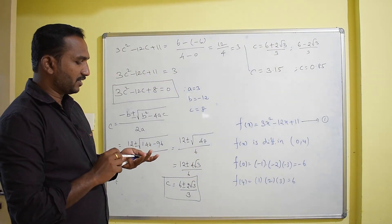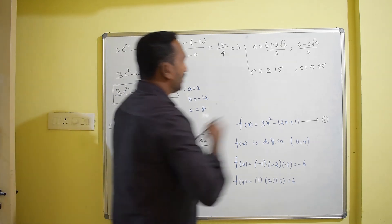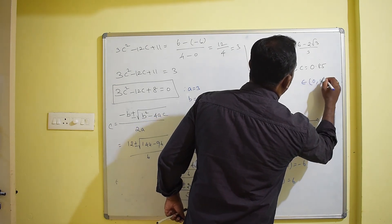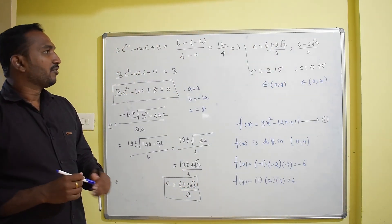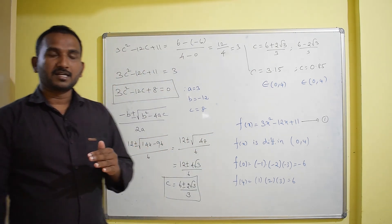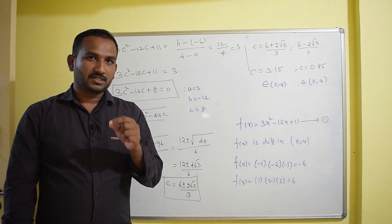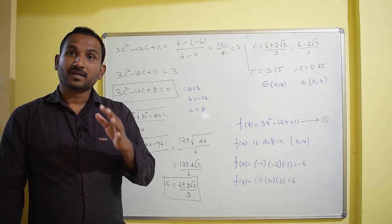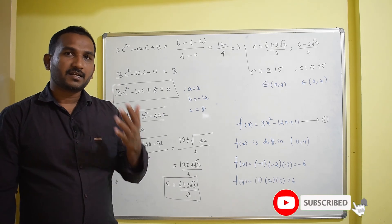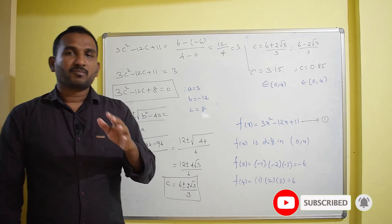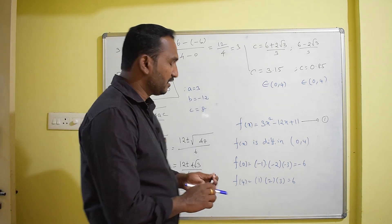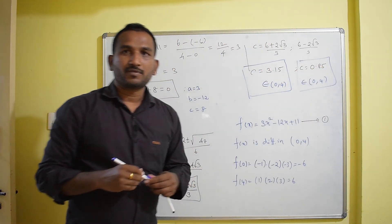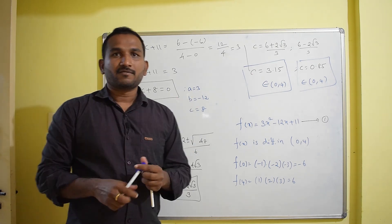Looking at the given interval (0,4): both c = 3.15 and c = 0.85 lie within the open interval (0,4). The theorem states that after the two conditions are satisfied, there exists at least one value c in the open interval (a,b) such that f'(c) = [f(b)-f(a)]/(b-a). Here we got two such values, 3.15 and 0.85, which is perfectly valid. This is how we verify Lagrange's Mean Value Theorem for the given function.